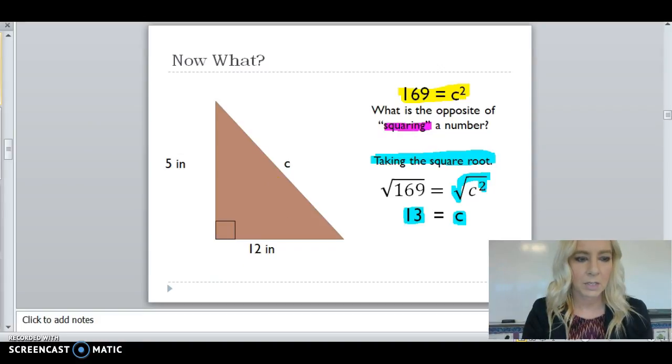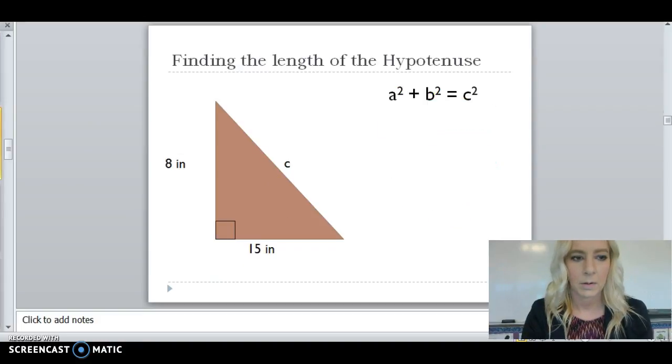Let's look at another example. We're going to take 8 squared plus 15 squared equals C squared.